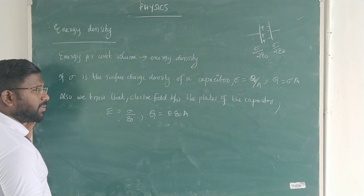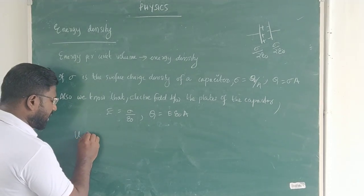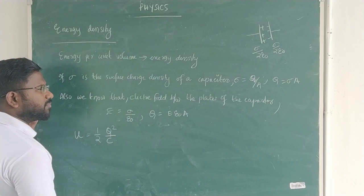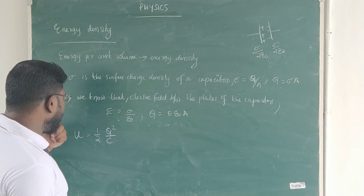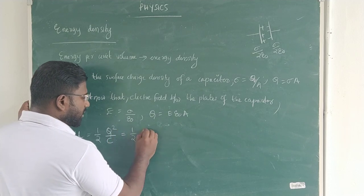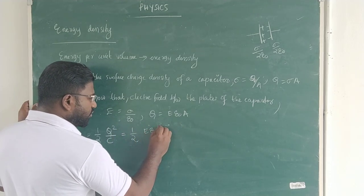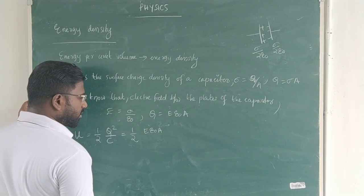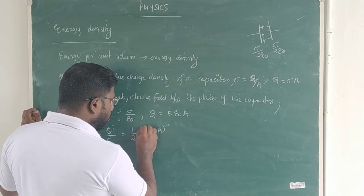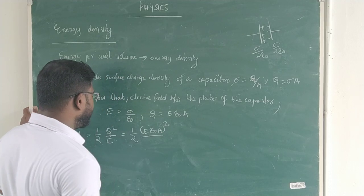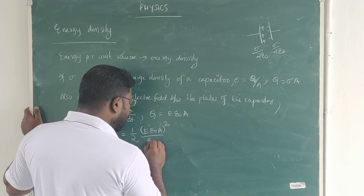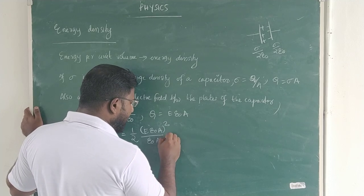Now let us get into the formula for energy stored in a capacitor: energy equals half Q squared by C. Substituting Q equal to sigma times epsilon zero times A, we get half into Q, then E times epsilon zero times A, the whole square, divided by the capacitance of a parallel plate capacitor, epsilon zero A by D.